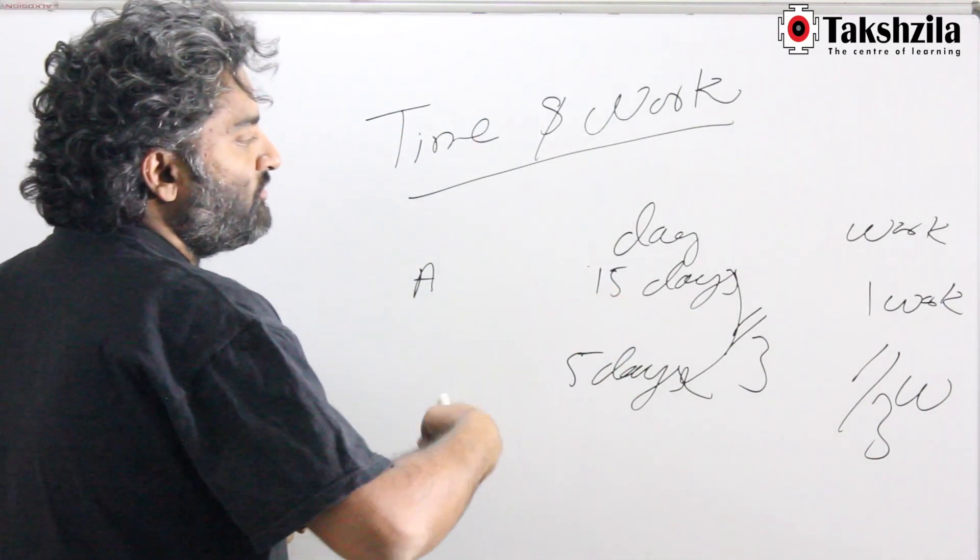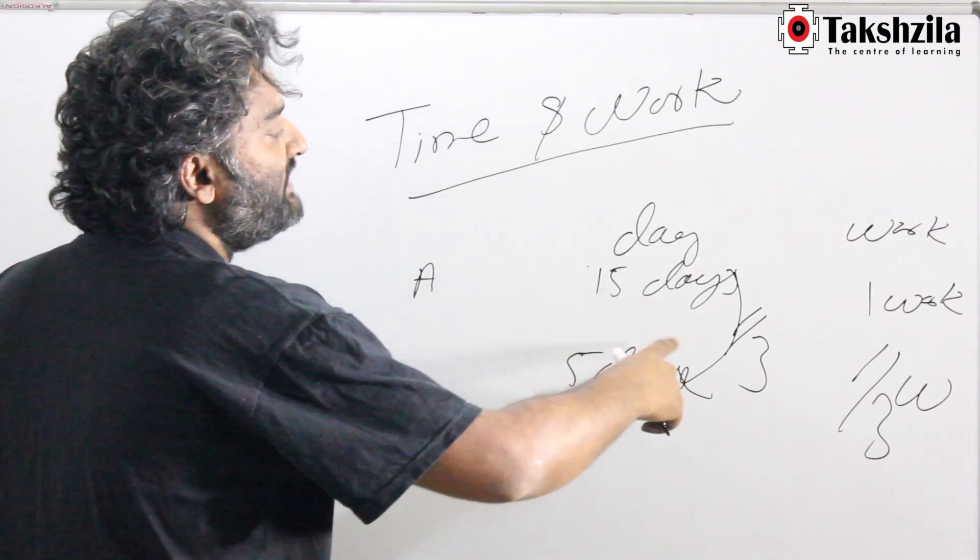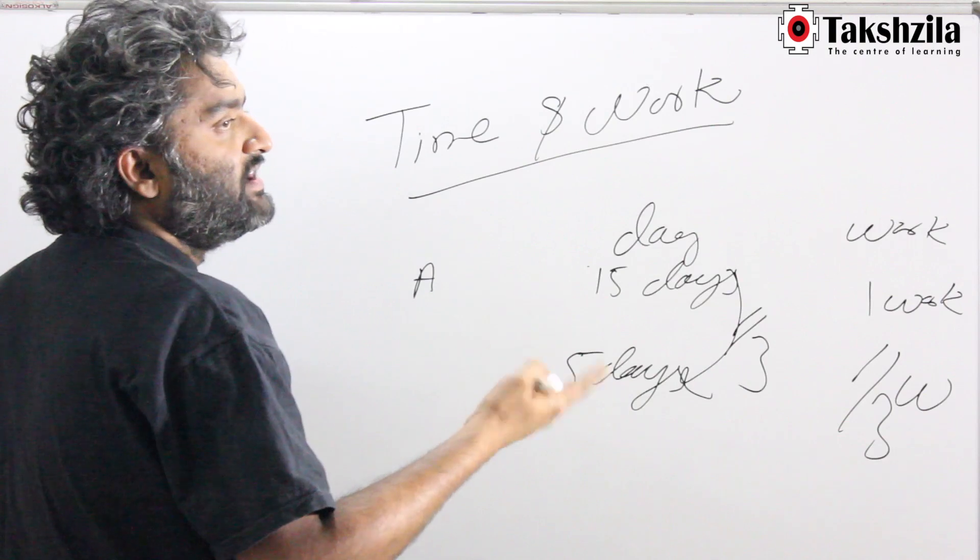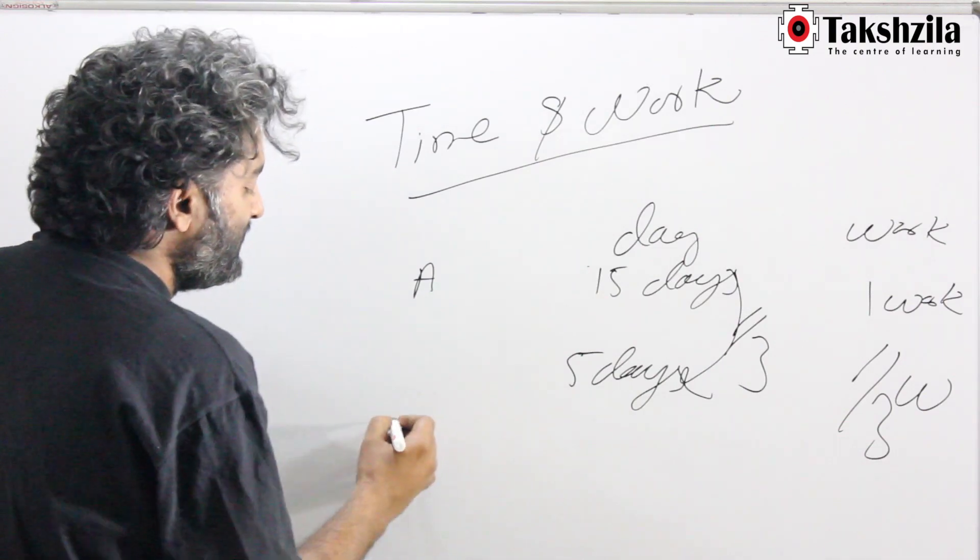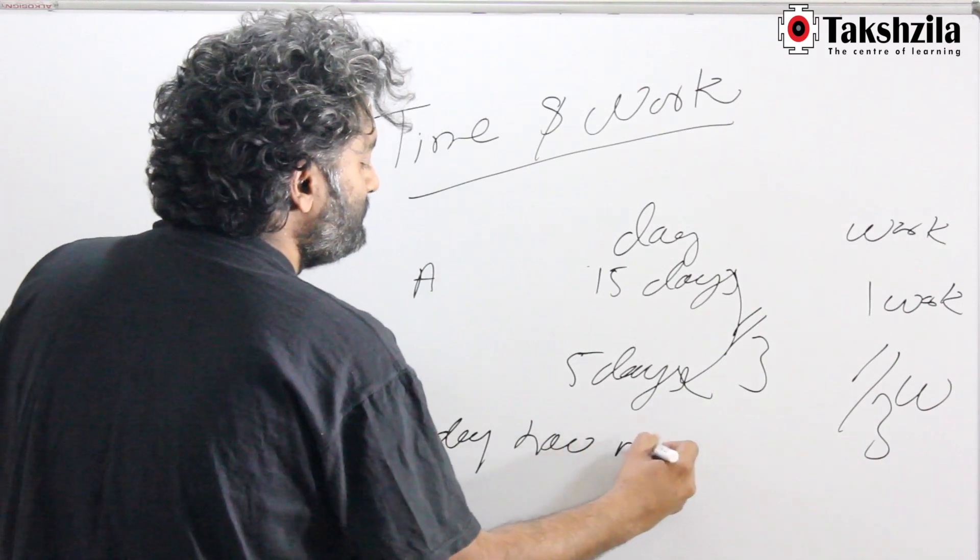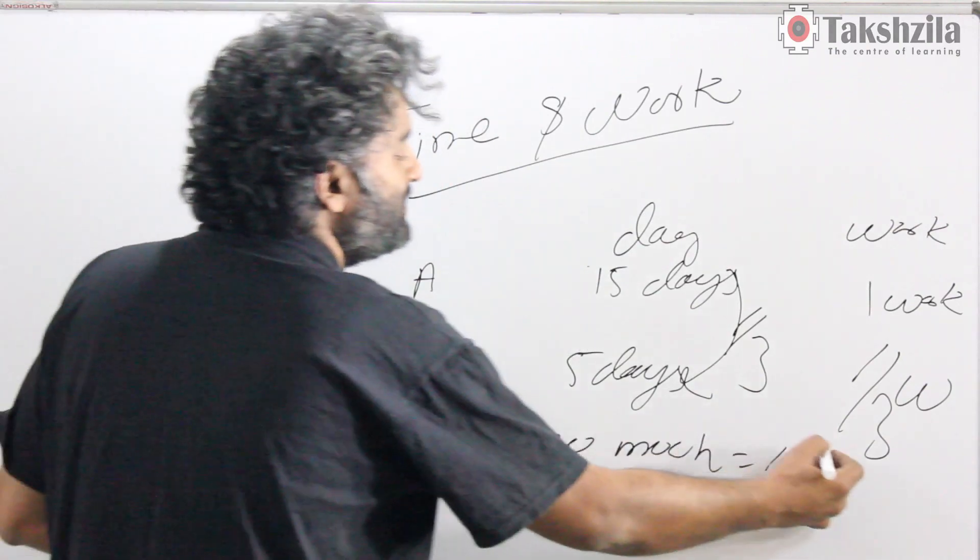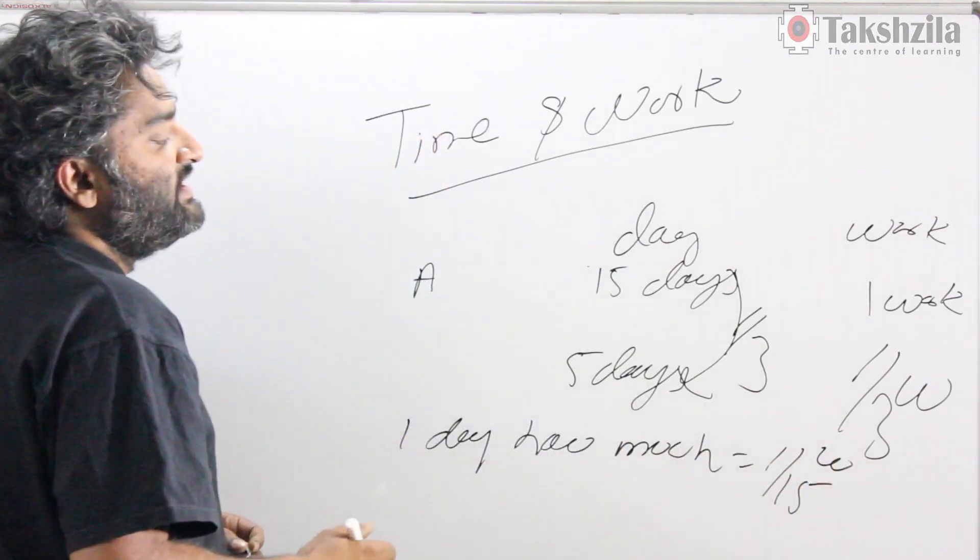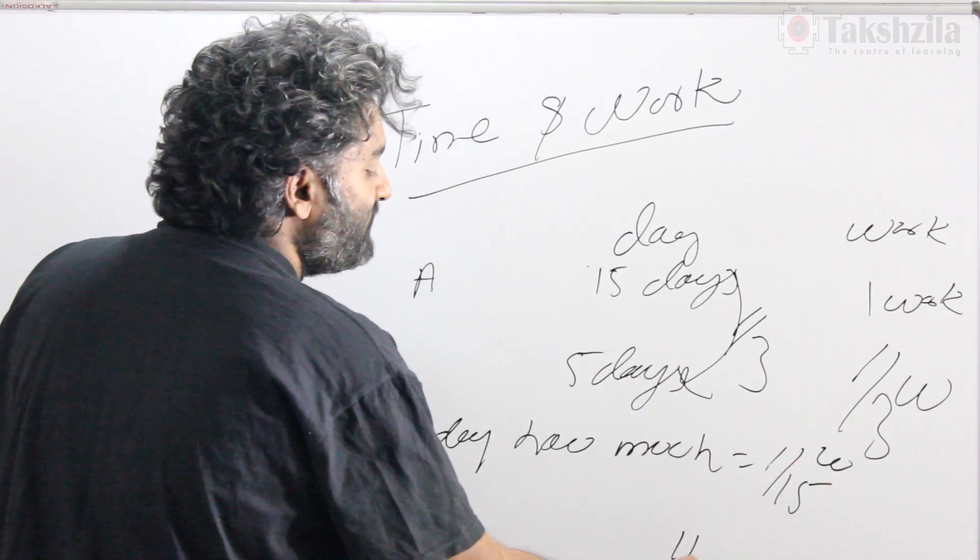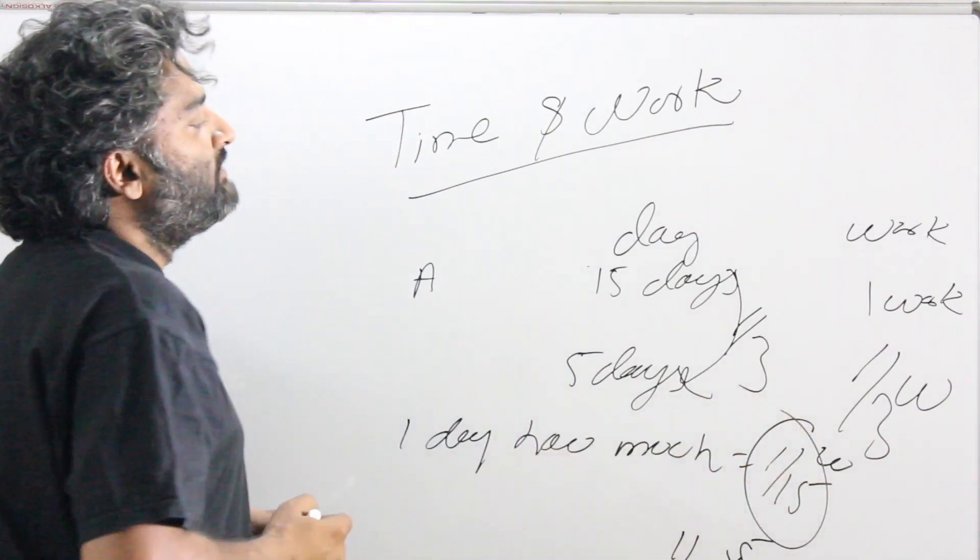Another way of doing this would be that in 15 days, all work gets done. In one day, how much of the work will get done? You will figure that out as 1 by 15 of the work is getting done. So if in one day, 1 by 15 is getting done, in 5 days, 5 times that. So 1 by 15 into 5.